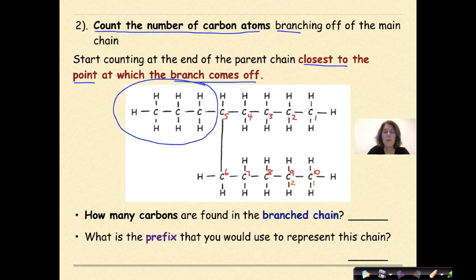If I had gone in the other direction and I started counting the number of carbons down here, 1, 2, 3, 4, 5, 6, 7, 8, 9, 10, I'd need to make a decision. And really, when you label these branching chains, you want the number coming off the parent to be the lowest number possible, which is why we're going to go with the five here and not the six.